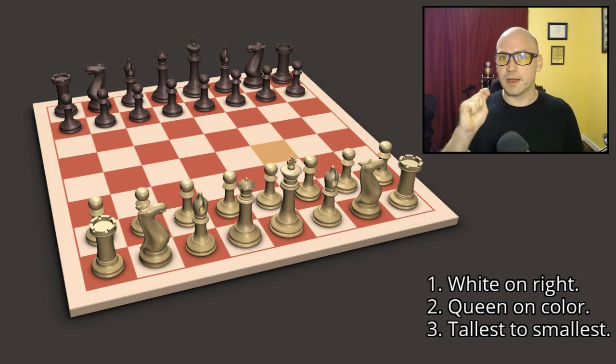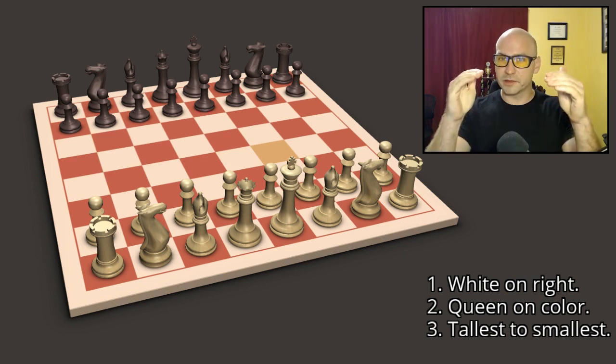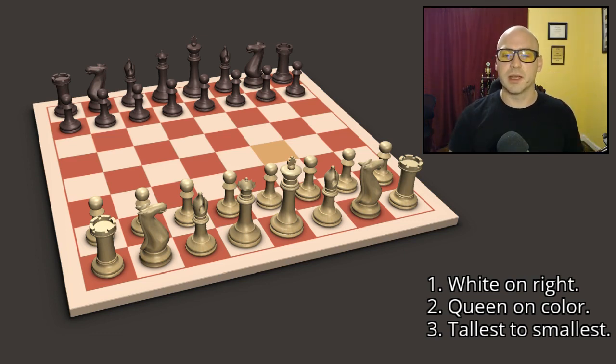Then the final thing to remember is go in order of height. Go tallest down to smallest. The king and queen sit in the middle of the board in the middle back of the board and then we have our bishops, we have our knights, we have our rooks.